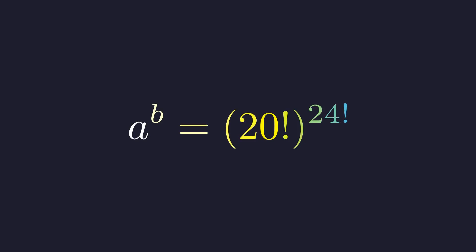Here's a deceptively simple-looking equation that's hiding some beautiful structure. We want to count how many pairs of natural numbers A and B make this true. Think of it like asking, in how many ways can we write this massive number as a power?